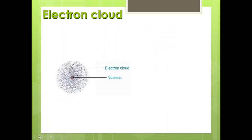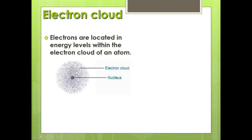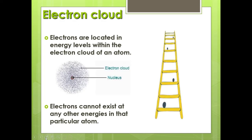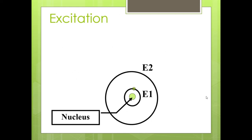Let's look at the actual formation of light itself by examining the atom. The atom is composed of a nucleus with electrons in an electron cloud around it. Those electrons exist in specific energy levels and can only exist at particular energy levels — not others. Using a ladder as an analogy, electrons are located at different rungs. Just as you can only stand on particular rungs, if an electron had enough energy to exist between two rungs, it would fall back down to the lower rung.